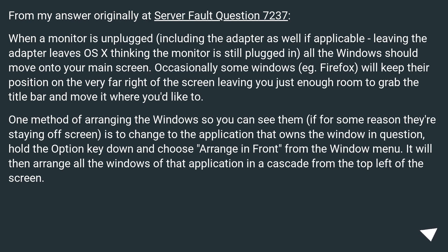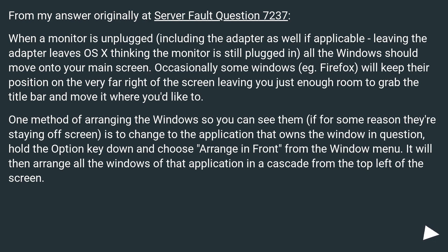One method of arranging windows so you can see them, if for some reason they're staying off screen, is to change to the application that owns the window in question, hold the Option key down, and choose Arrange in Front from the Window menu. It will then arrange all the windows of that application in a cascade from the top left of the screen.